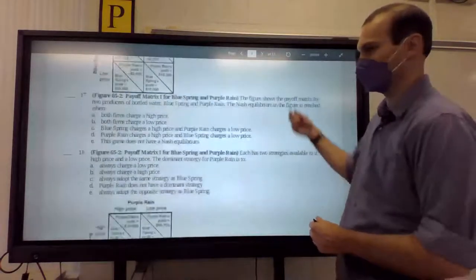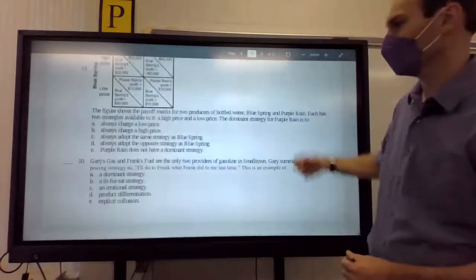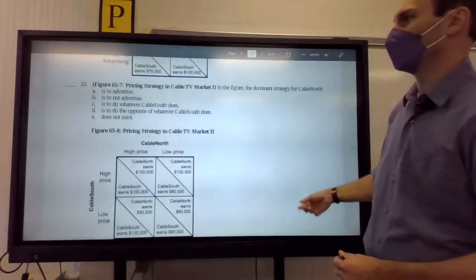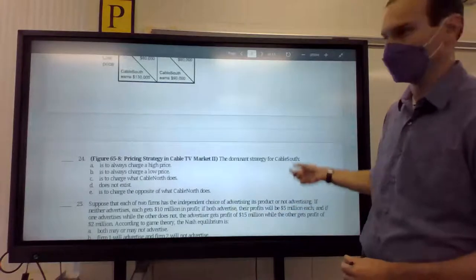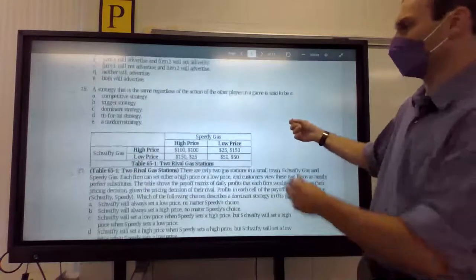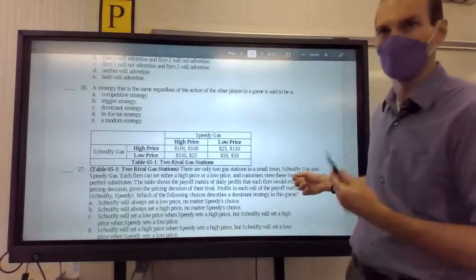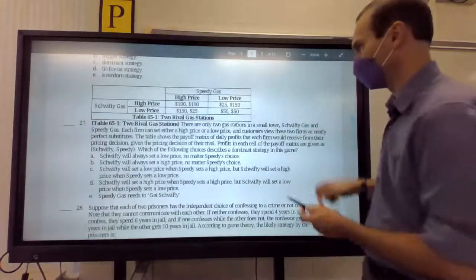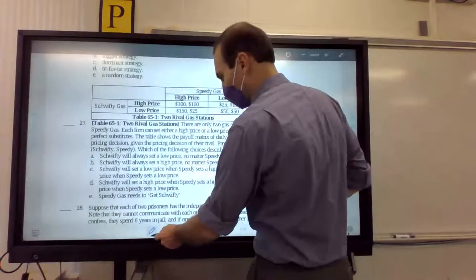The 27. All right. 27. It has another payoff matrix. But it looks a little different from the ones you guys have been seeing. Because on this one, they don't have the line in here. And I know you guys are used to the line. But it's fine. You don't need the line. But if you want to draw the line in here, you can.